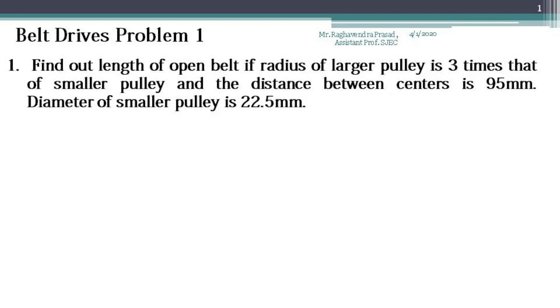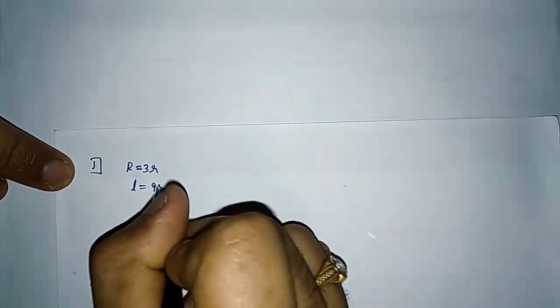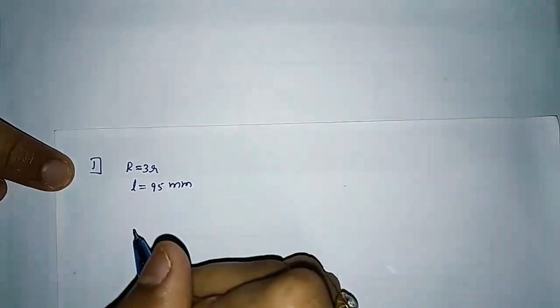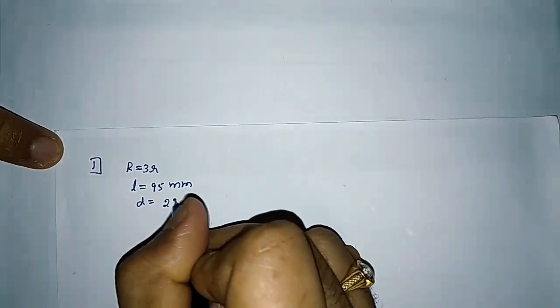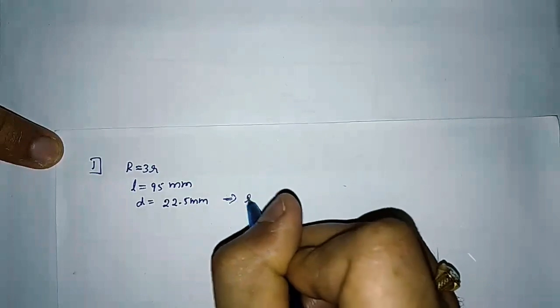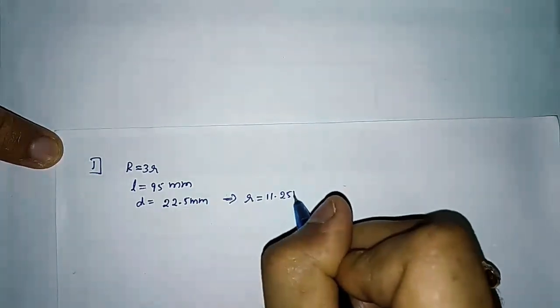We'll start with the first problem. Find out the length of open belt drive if the radius of the larger pulley is 3 times the smaller pulley and the distance between the centers is 95 mm. Diameter of smaller pulley is 22.5 mm. So capital R is equal to 3r, L is equal to 95 mm, and small d is 22.5 mm, giving radius of driven pulley as 11.25 mm.